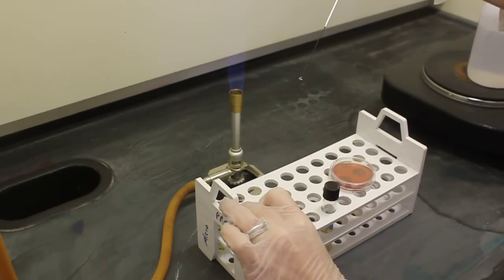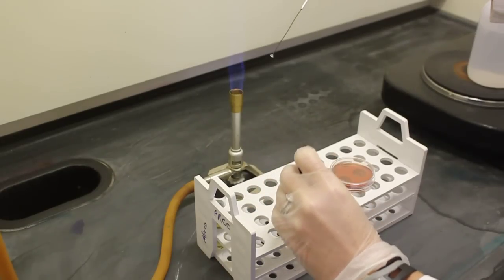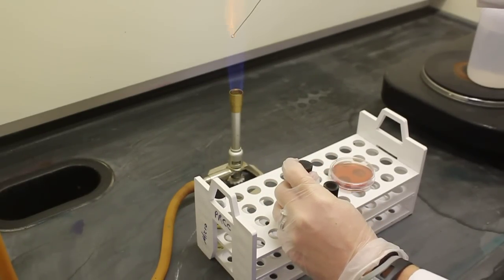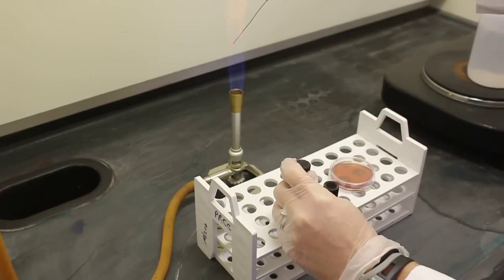To inoculate the slant, I will use the same procedure, re-sterilizing my loop. Even though I am going to be using the same bacteria, you cannot double dip the loop. You always have to re-sterilize the loop.